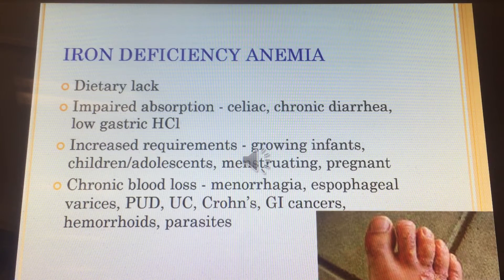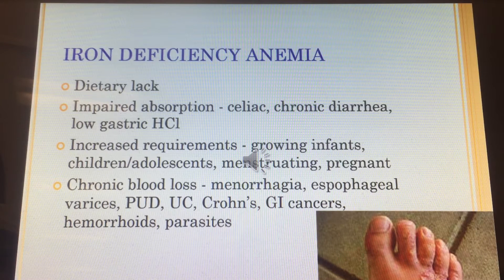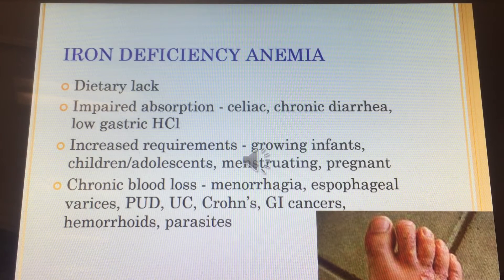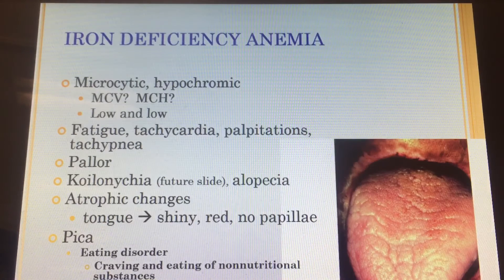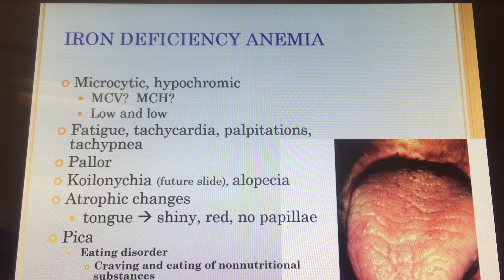Hemorrhoids are basically small ulcers in the colon. Parasites are another cause — you can see the image of parasites in someone's foot. So you can have decreased iron absorption, iron loss, and slow bleeds. Iron deficiency anemia presents with small, pale red blood cells, so the MCV and MCH are both low.